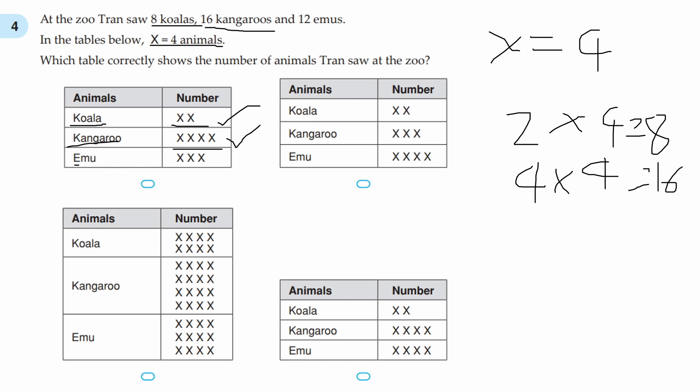And if we look at emus, there are 3 X's, and 12 emus. The 3 X's times by 4 is 12. And that is correct. So, the answer is A.